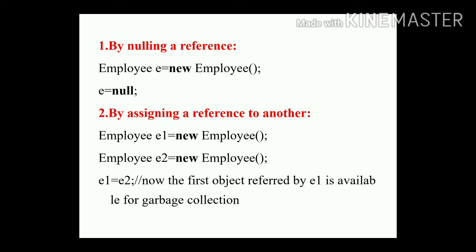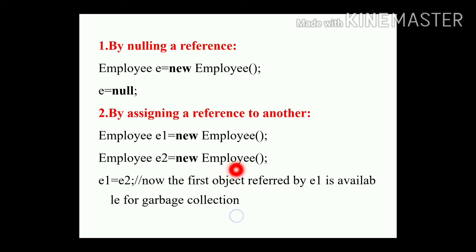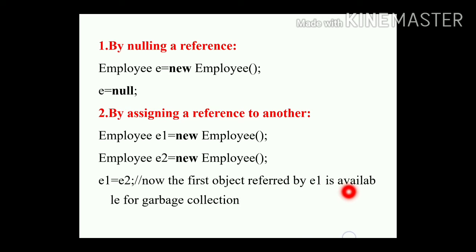The second way is by assigning a reference to another. Here two variables are declared: Employee e1 is created with the new keyword, and Employee e2 is also created with the new keyword. Then e1 = e2 — it means the first object originally referenced by e1 is now available for the garbage collector.